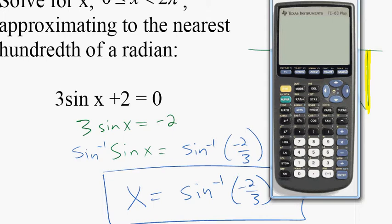And then you can type in that ratio, negative 2 divided by 3. And you're going to get negative 0.7297.